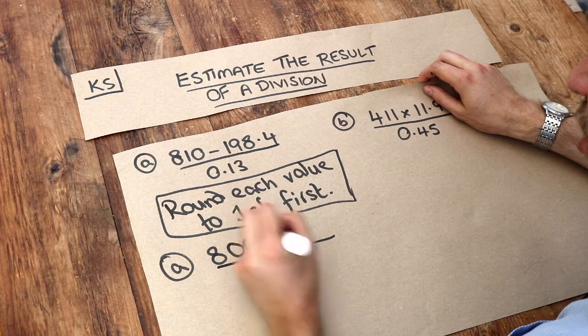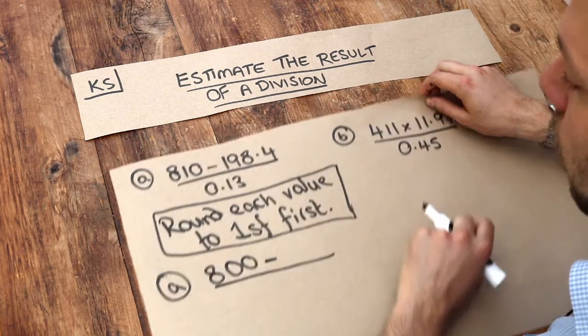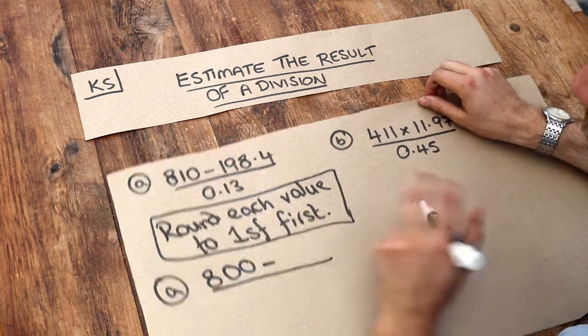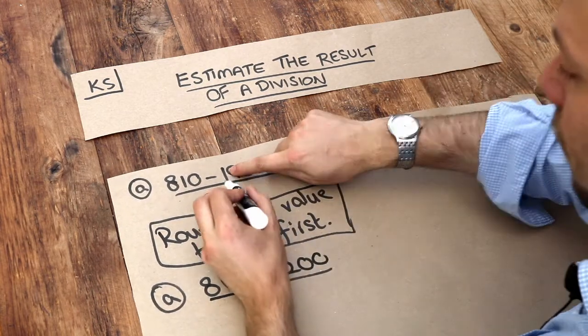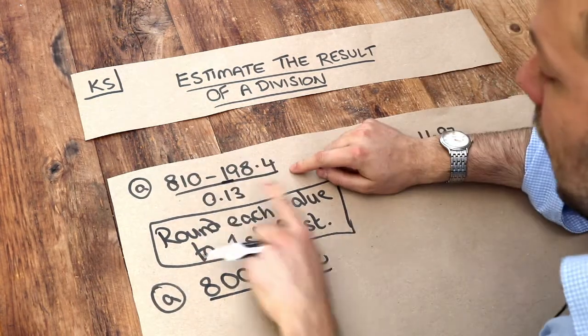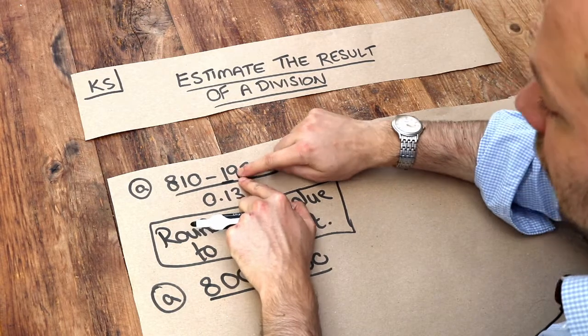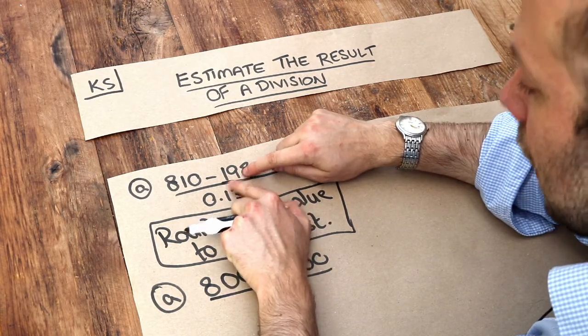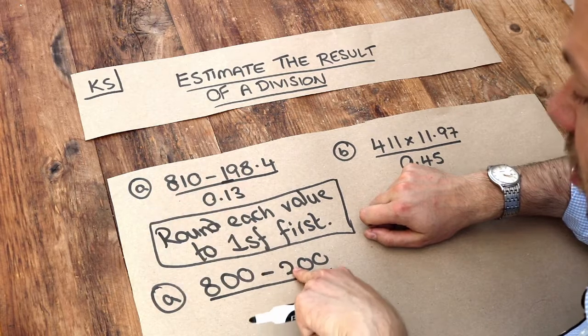Then we've got a subtraction. Now 198.4, if we round that to one significant figure, that is 200. Remember we check the first digit because we want one significant figure. We look at the digit just after it. If that's 5 or larger, then this digit here goes up by 1, which it did up to 2.